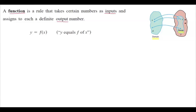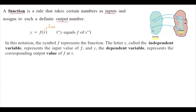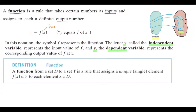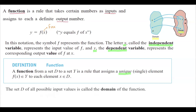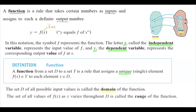We usually represent a function in one free variable using y equals f of x. x is a free variable — officially, we say that x is independent because we can freely choose values for x and plug them into the function. A function from a set D, which is the domain, is a rule that assigns a unique y value to each element in the domain. The set D of all possible input values is called the domain.